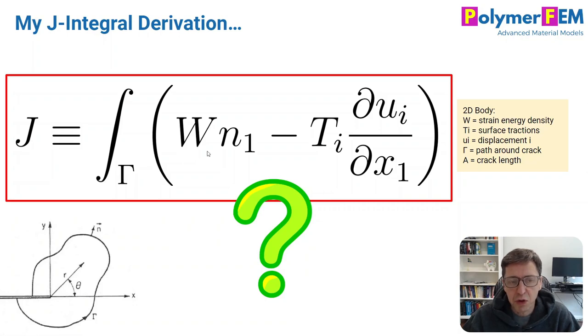So let's just define a few terms first. W is the strain energy density, n is the normal to the path around the crack tip, t is the surface traction, u is the displacement, and x is the direction of the crack.